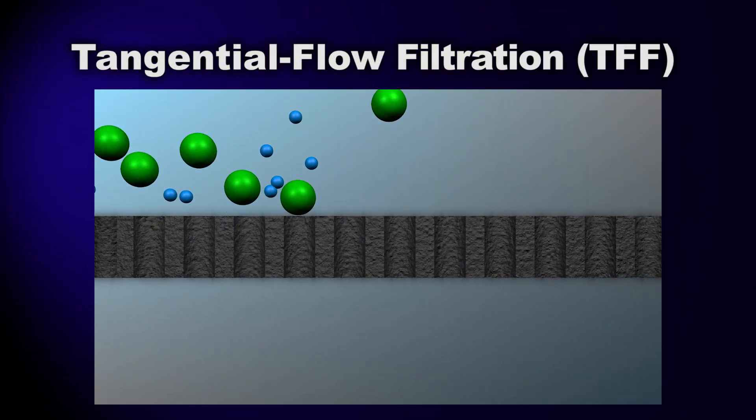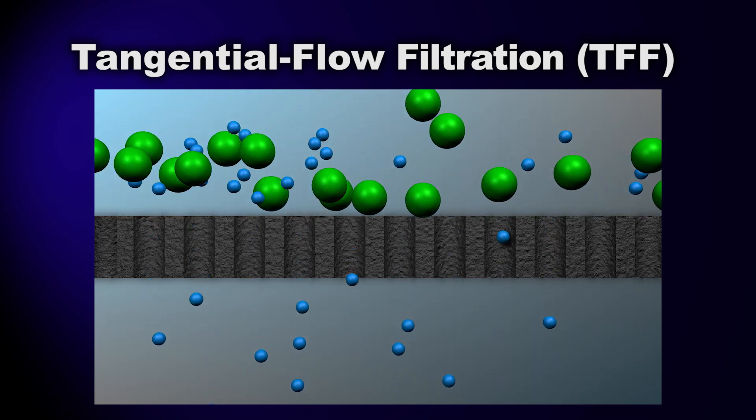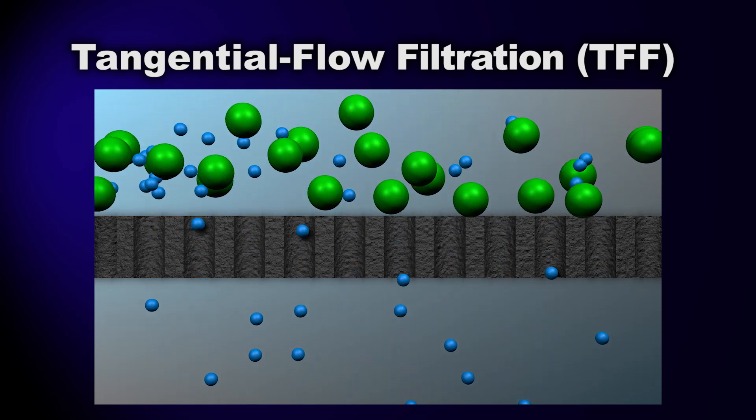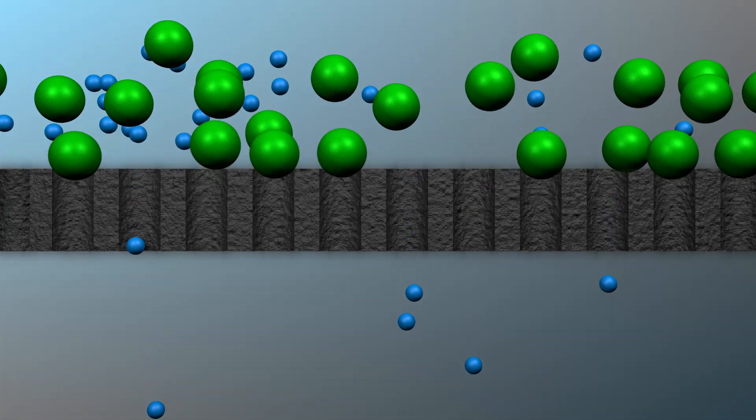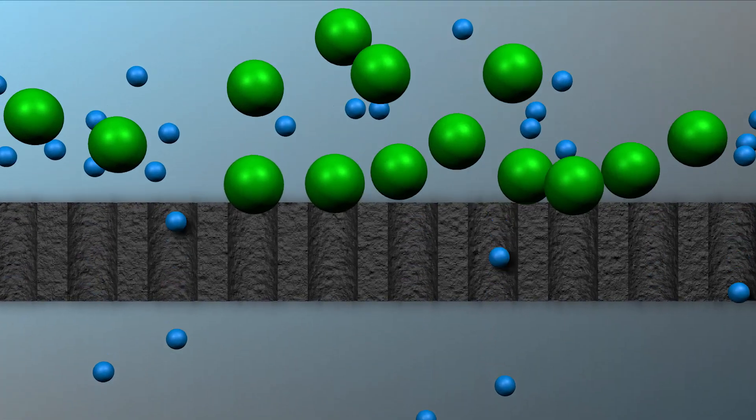With TFF, the stream moves across the filter—that is, tangential to the filter instead of directly at it. The cross flow current actually picks material back out of the filter media or membrane and into the stream.